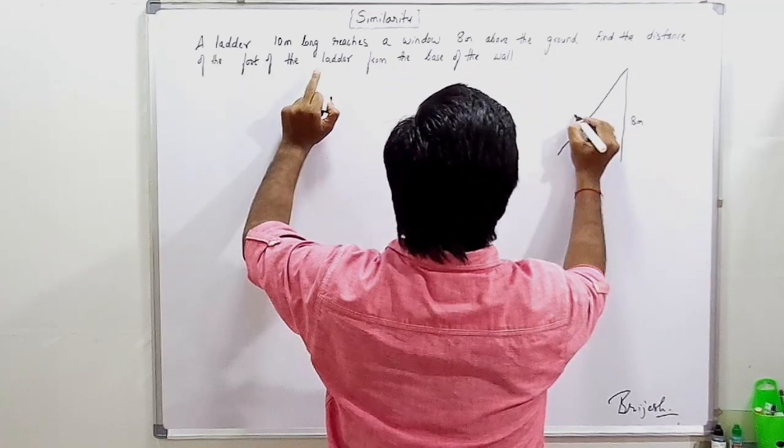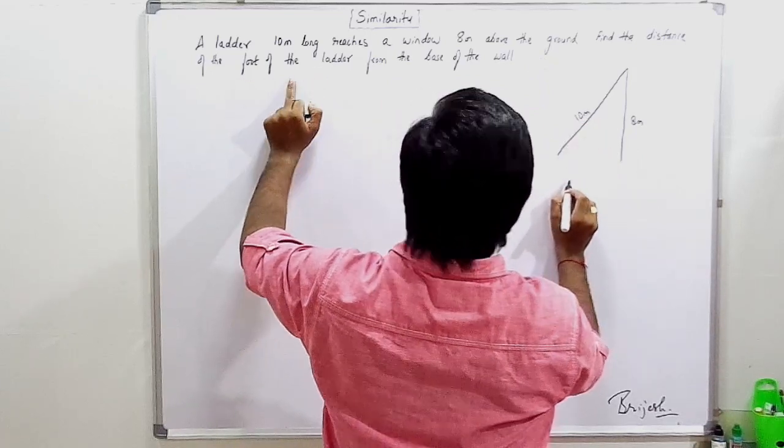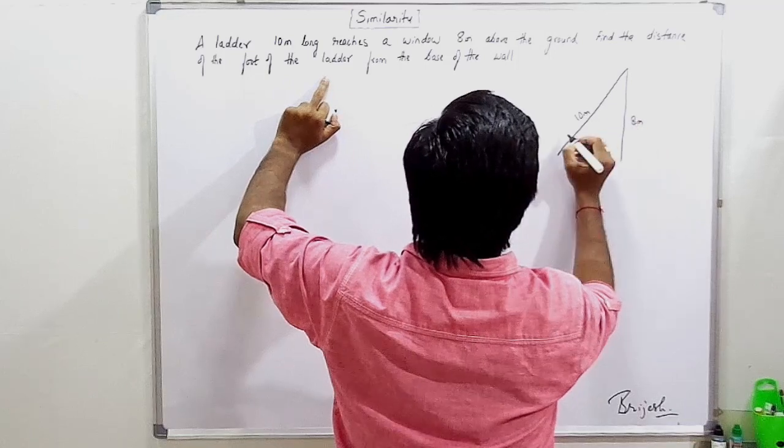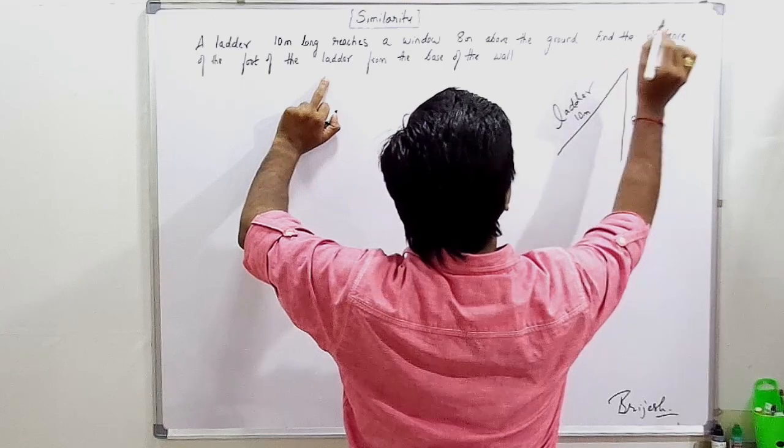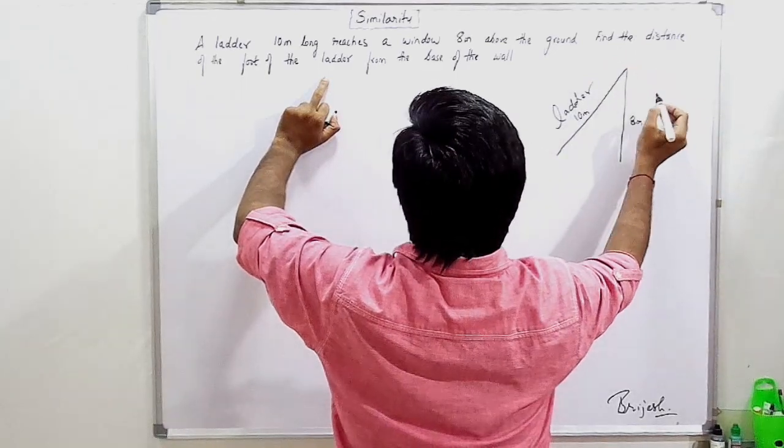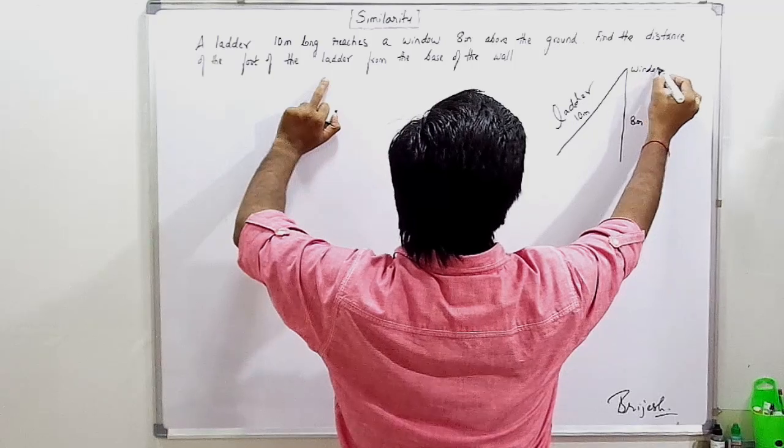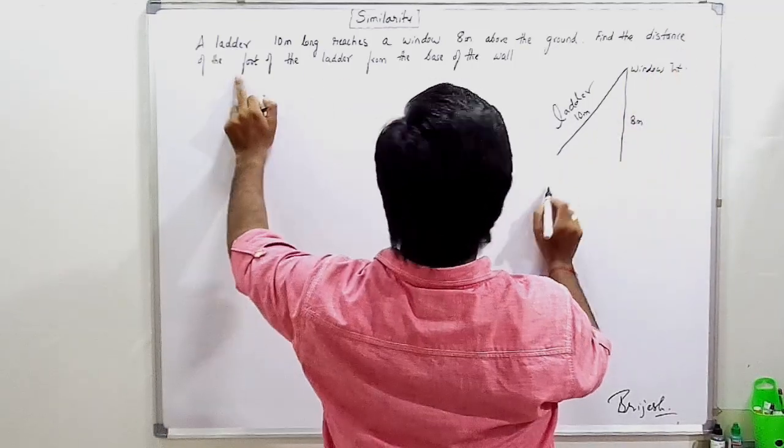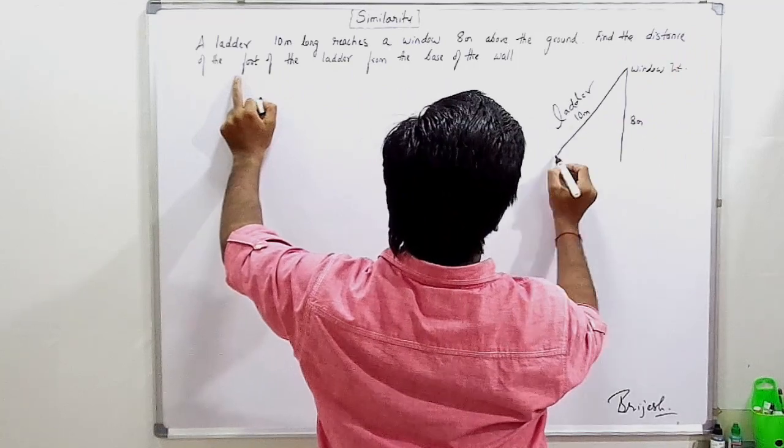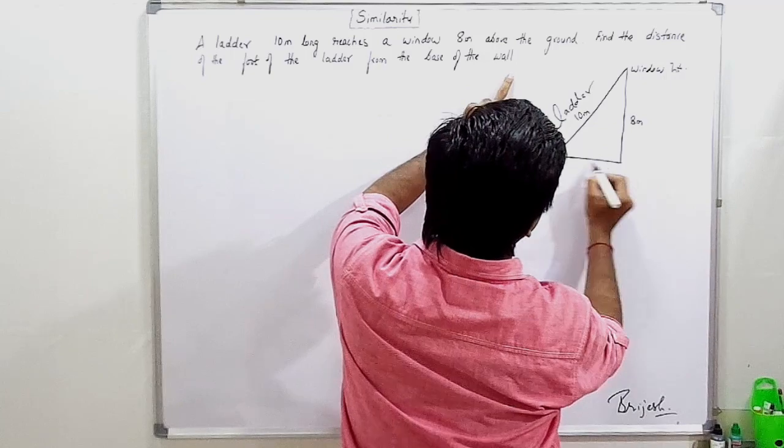Ladder 10 meters. Find the distance of the foot. Ladder. Window height. Find the distance of the foot of the ladder from the base of the wall.